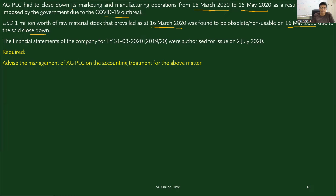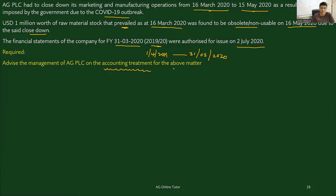So what happened during this close down from 16th March to 15th May — the stock which prevailed as at 16th March was found to be obsolete. The financial statements of the company for the year ended 31st March 2020, covering the financial period 1st April 2019 till 31st March 2020, were authorized for issue on 2nd July 2020. The question requires us to advise the management of AG PLC on the accounting treatment for this matter.